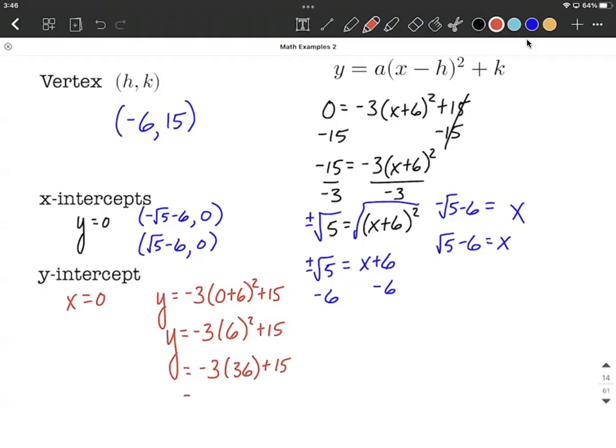Then we'll multiply before we add. So negative 3 times 36 makes negative 108 plus 15, which turns out being negative 93. So as an ordered pair, that's going to be 0 comma negative 93 for our y-intercept where we cross the y-axis.